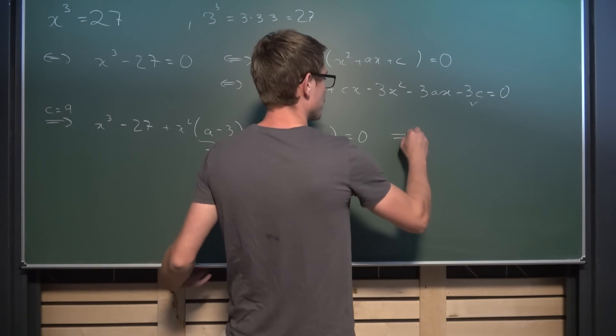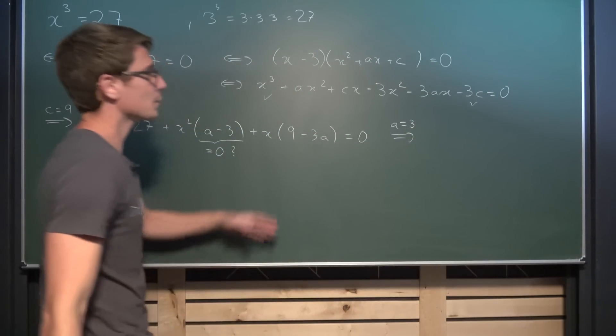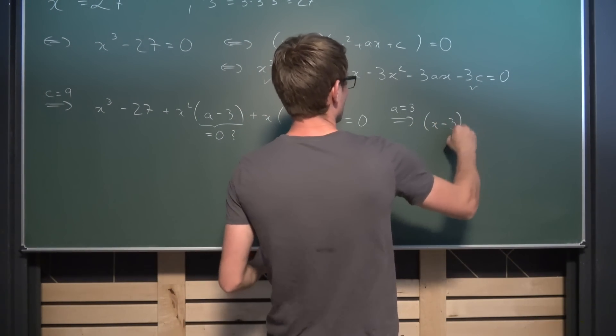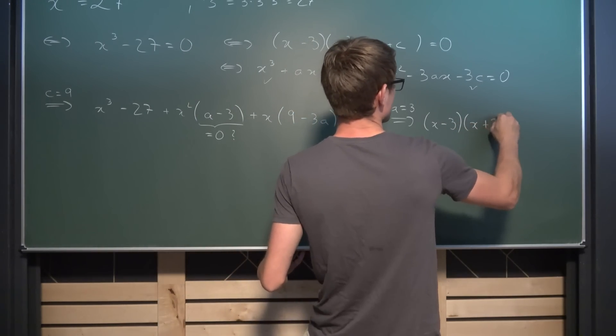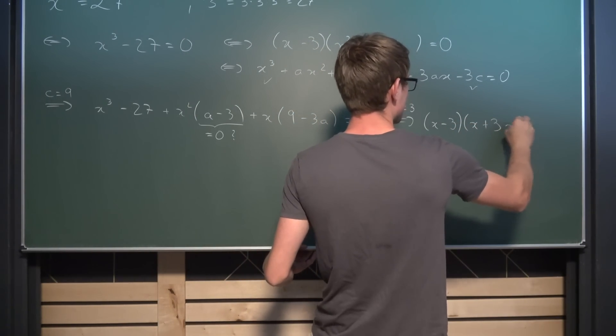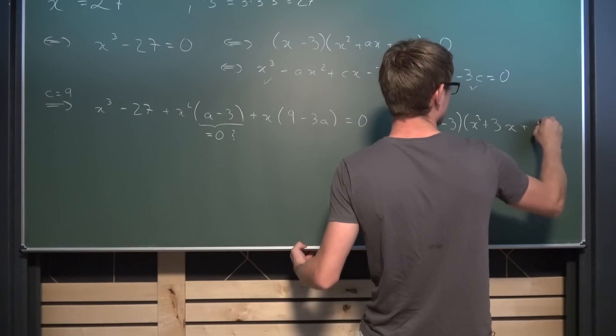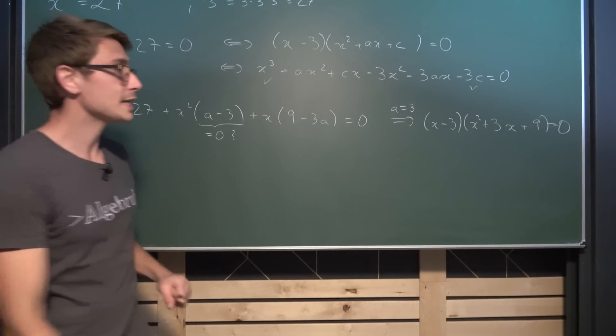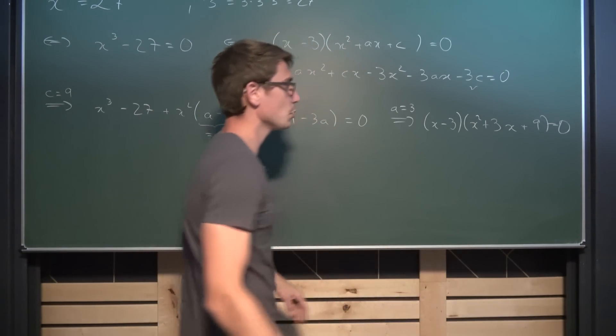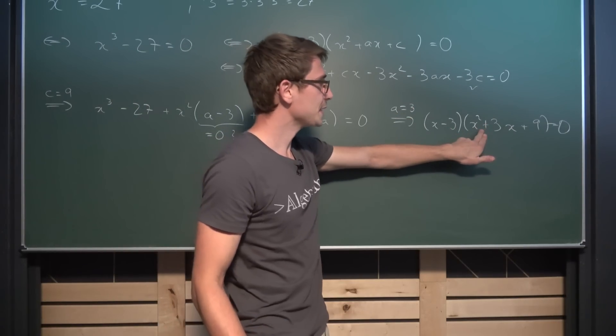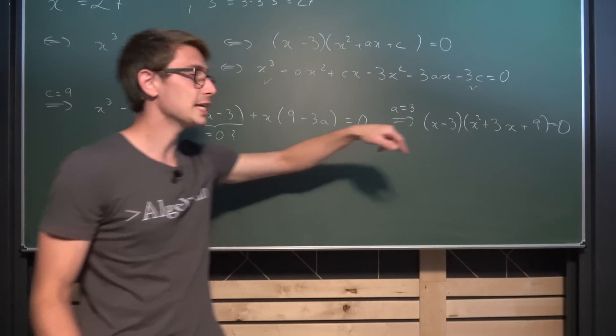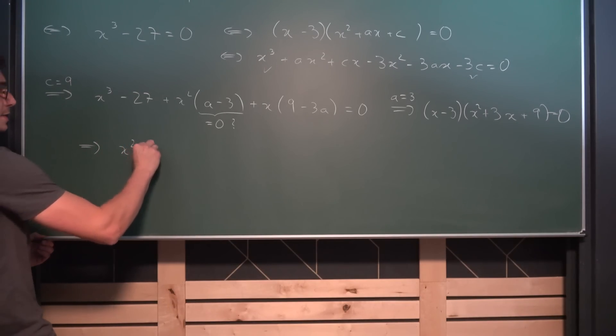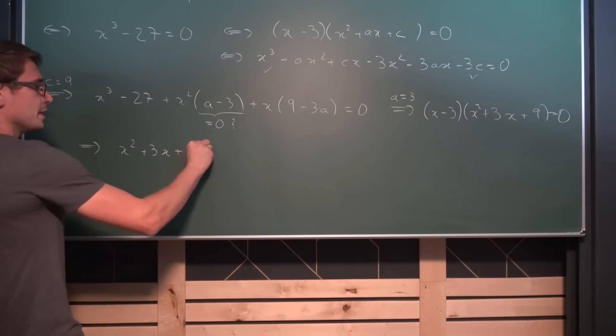So that means if a is equal to 3 we are going to get the following linear factorization of our original polynomial, namely x squared plus 3x plus 9 is equal to zero. And as mentioned before those are linear factors, meaning if either of those is equal to zero the whole polynomial collapses to zero. Meaning if we set this equal to zero we are going to get our other two solutions for the original polynomial of x squared plus 3x plus 9 is equal to zero.